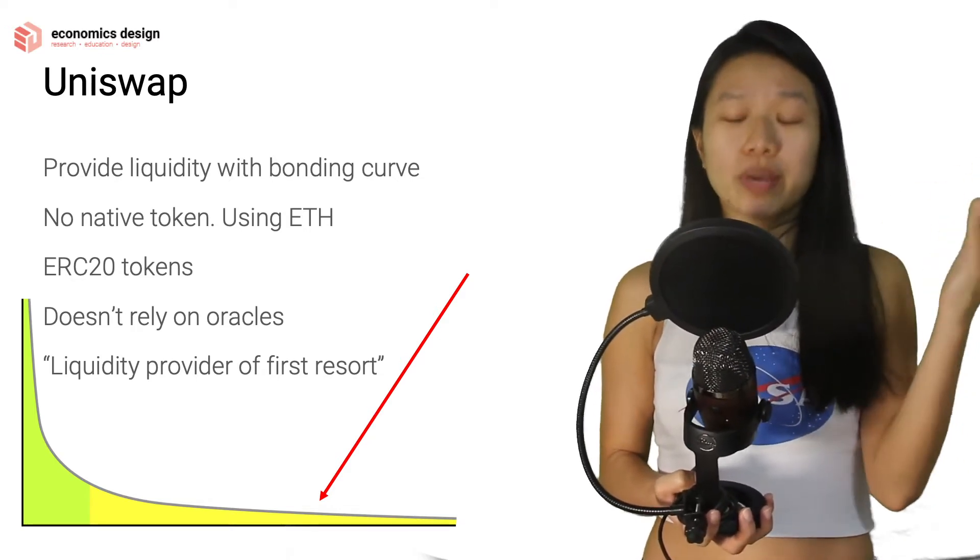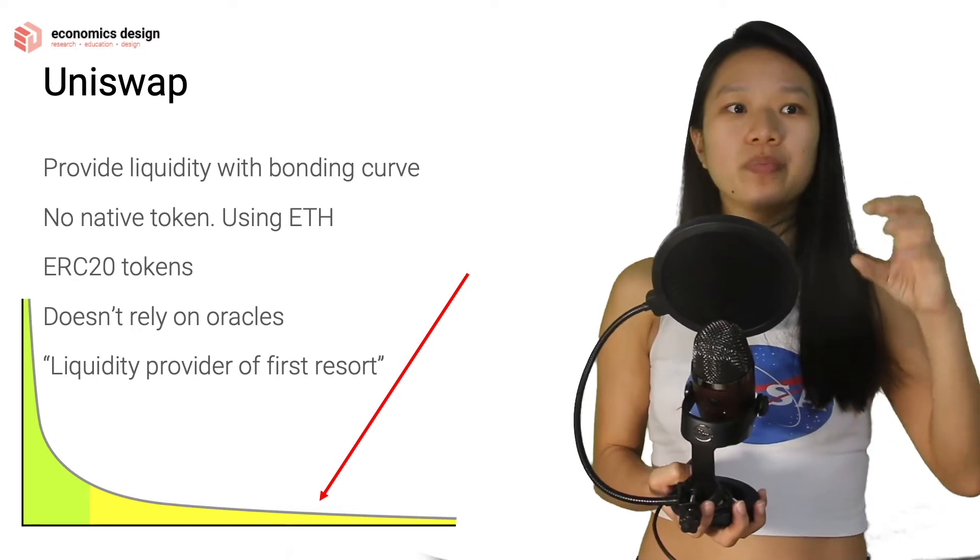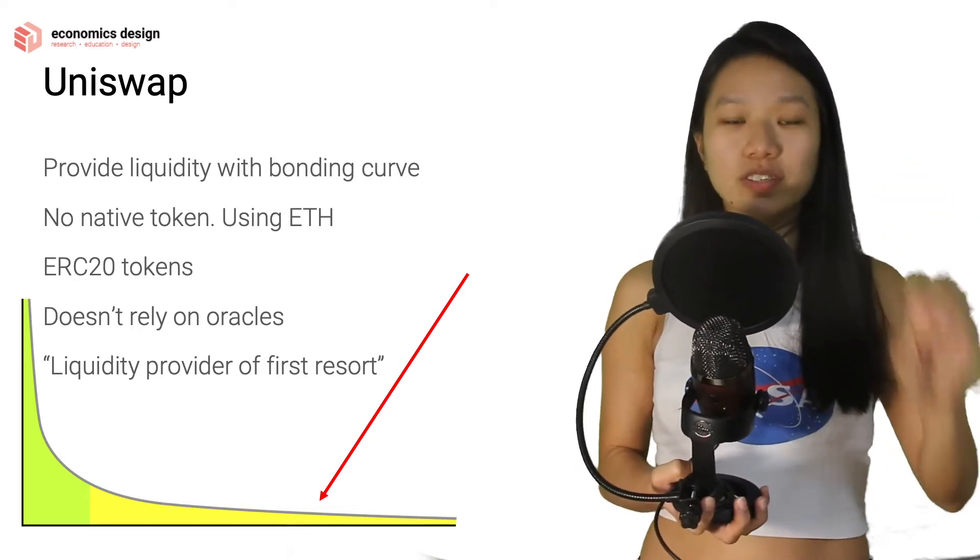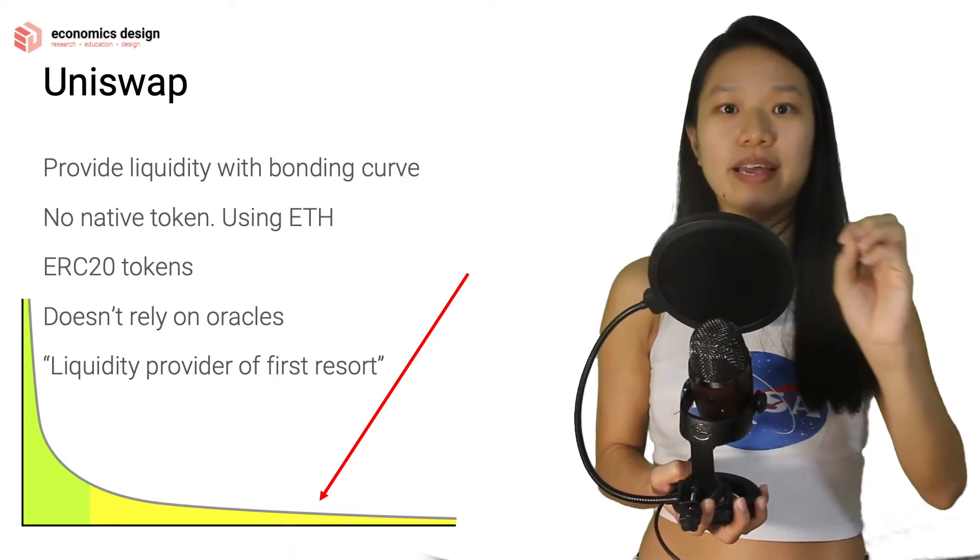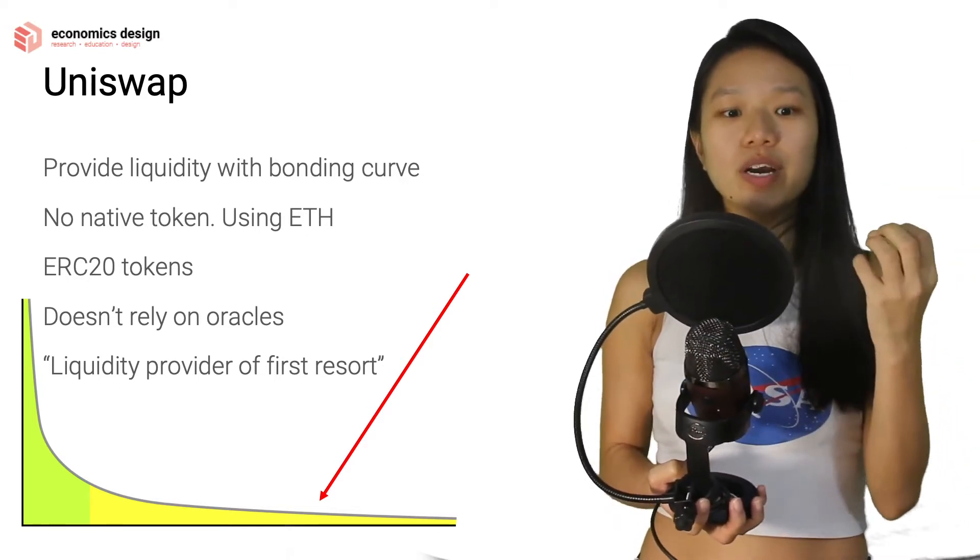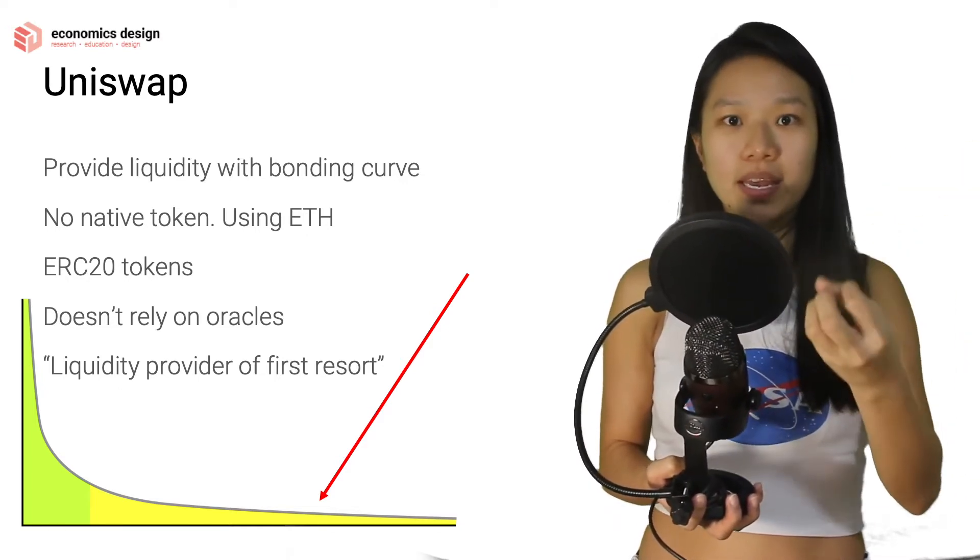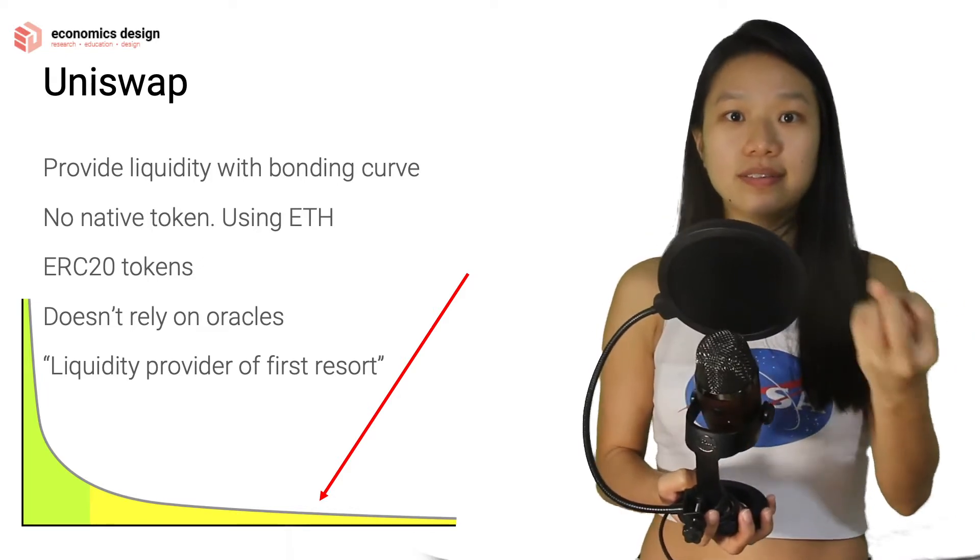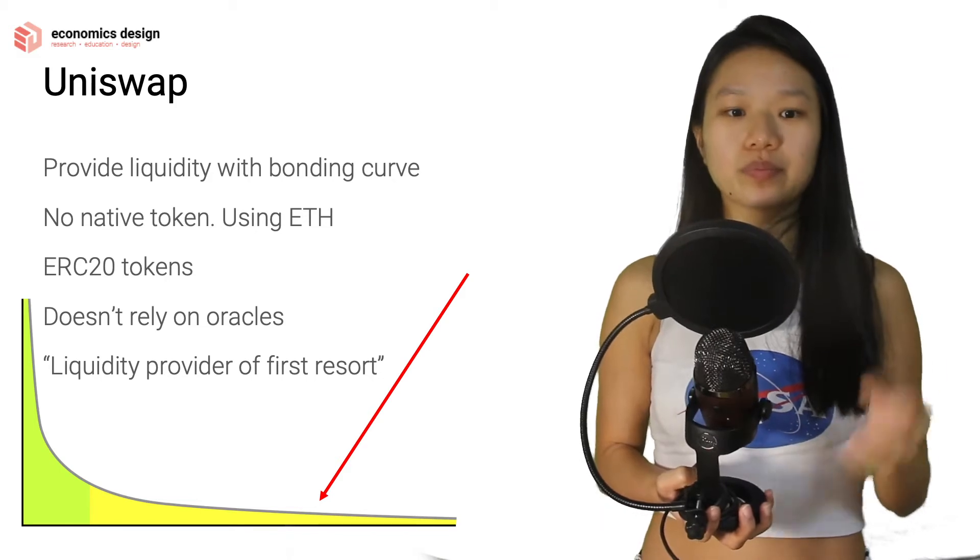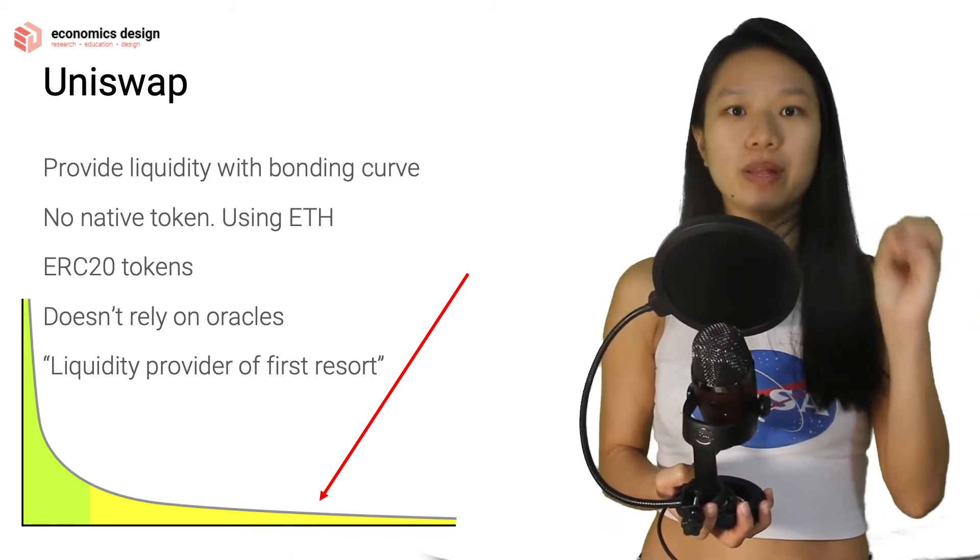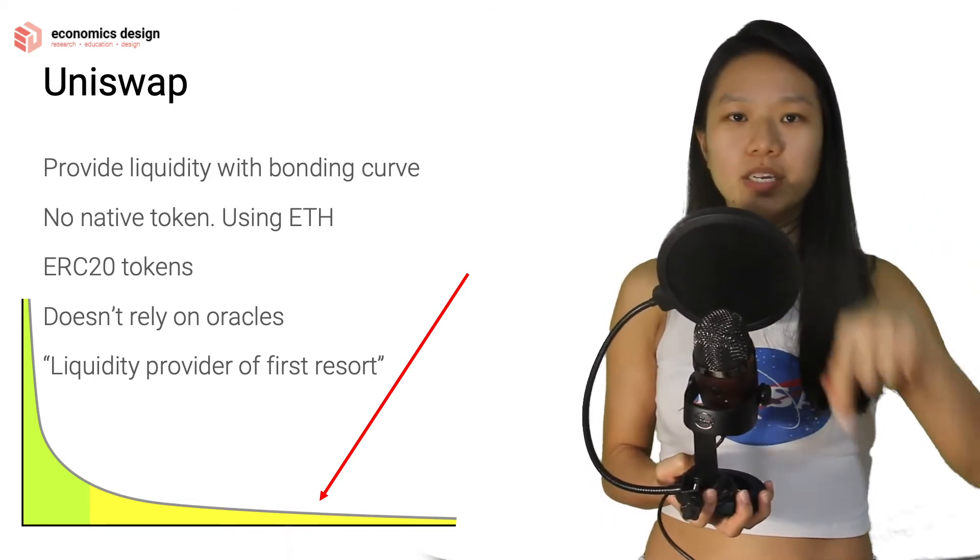So with Bancor, you can't do that because with Bancor, the tokens that they have is not just ERC20, it also includes different kinds of tokens like EOS and other different platforms. So you can't really have Ethereum to be your main denominator because Ethereum doesn't work well in EOS pool, for example. So Bancor has its own token BNT to allow interoperability between all these pools.